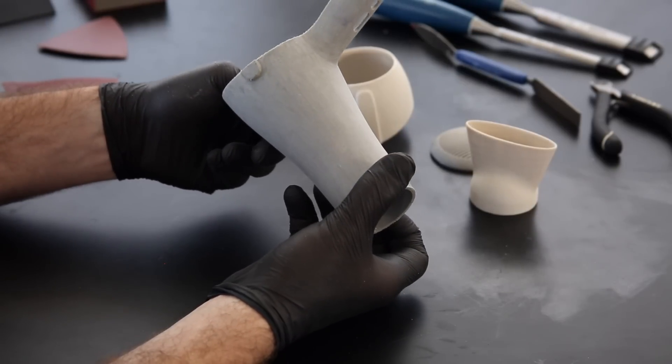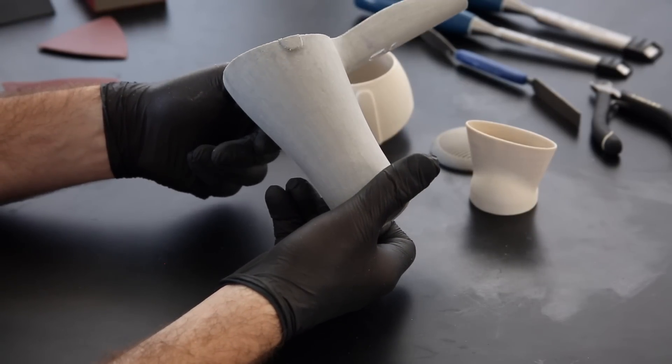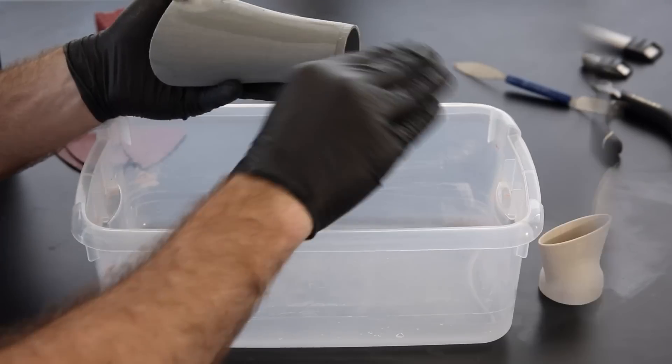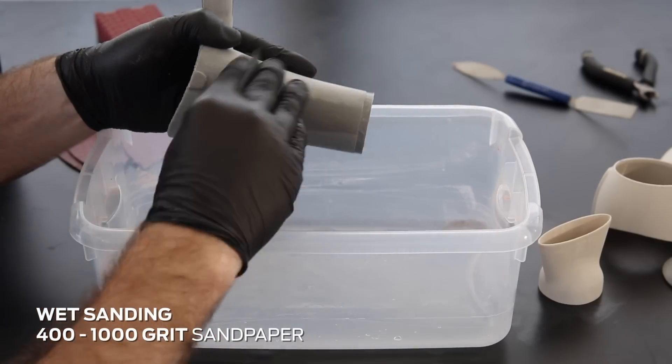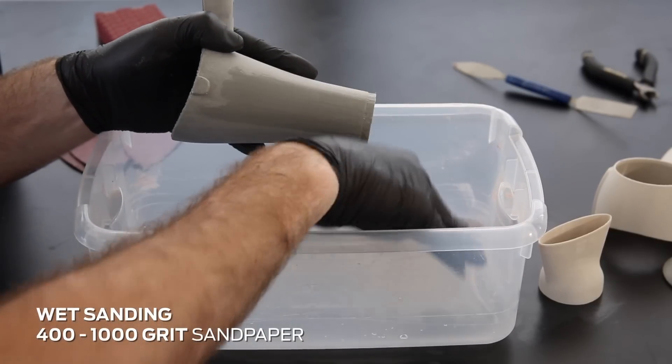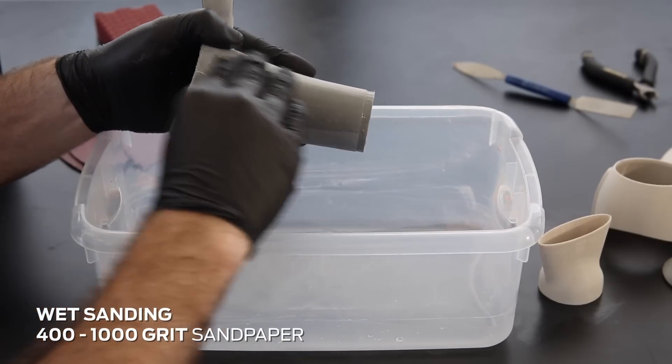Once you have sanded through 80, 120, and 240 grit sandpaper, we suggest wet sanding with 400 to 1000 grit sandpaper to achieve a completely blemish-free surface.